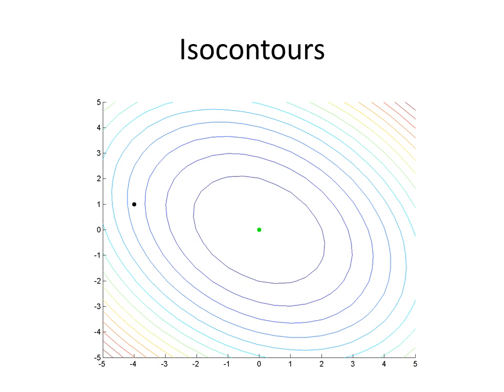We can do this by looking at the isocontour graph of the function f. We can compute the minimum analytically, or by looking at the isocontour graph, notice that it is at 0,0. Suppose that we started off with an initial guess of negative 4,1, represented by the black dot on the map. Using this initial guess, we want to find the minimum.